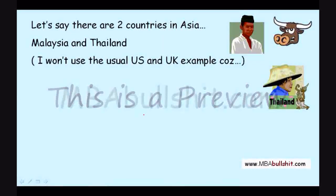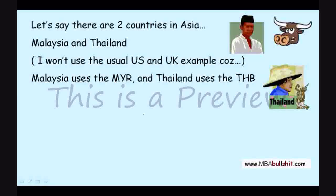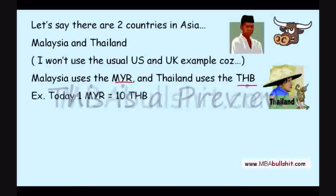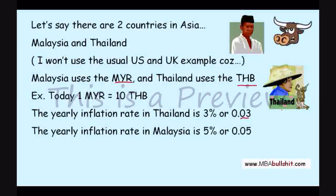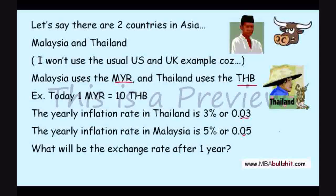I won't use the usual US and UK example because most of my viewers are from the US and UK and I don't want to confuse you. So let's use Malaysia and Thailand. Malaysia uses the Malaysian Ringgit, written as MYR, and Thailand uses the Thai Baht, written as THB. Today, the Malaysian Ringgit equals exactly 10 Thai Baht. The yearly inflation rate in Thailand is 3%, written as 0.03, and the yearly inflation rate in Malaysia is 5%, written as 0.05.